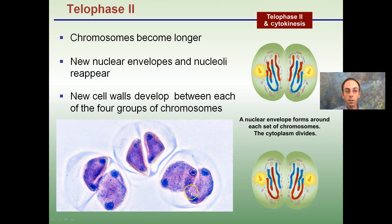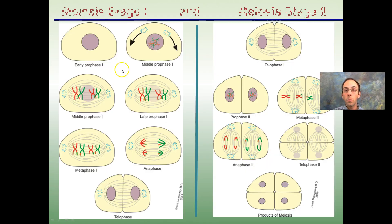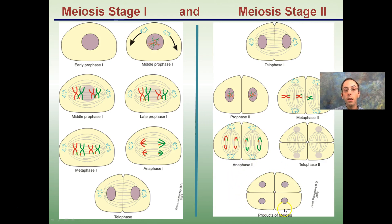The nuclear envelope forms around each set of chromosomes and the cytoplasm divides, producing four distinct cells. The key result of meiosis is ending up with four cells, each containing half of the total genetic information.